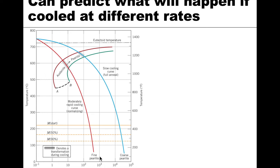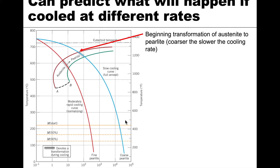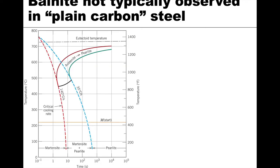The slower cooling forms coarse pearlite, while the moderate rate forms fine pearlite. In plain carbon steel, which has few alloying elements, the pearlite reaction is relatively fast — it starts within about one second, so the transformation happens very rapidly.